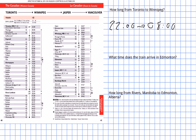The first question: how long does it take to go from Toronto to Winnipeg? Toronto departs at 22:00 (10 PM) and Winnipeg arrives at 8:00 AM. Counting on: 22 to 24 is two hours, then 24 to 8 is another eight hours, giving a total travel time of ten hours.